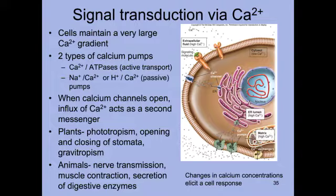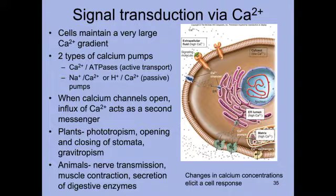Most cells maintain a very large calcium ion gradient, and this is maintained by two different types of pumps. We first have the calcium ion ATPase pump, which is a form of active transport. Active transport is when we are moving molecules against a concentration gradient — from an area of low concentration to high concentration — and that requires energy, which is why it's called active transport.